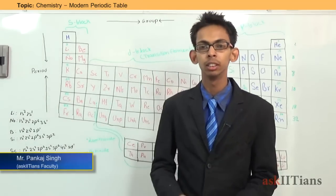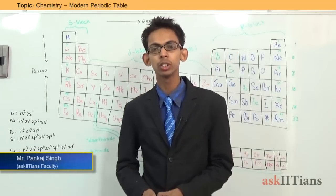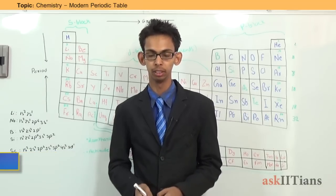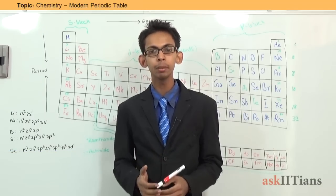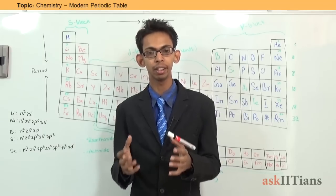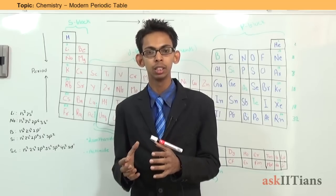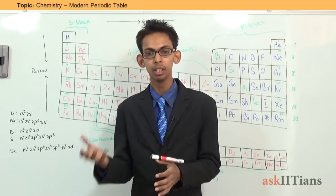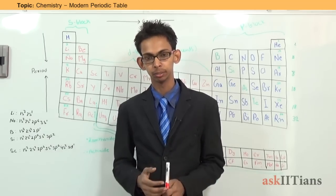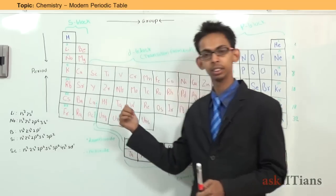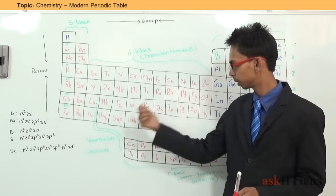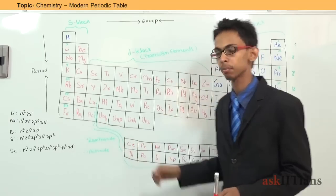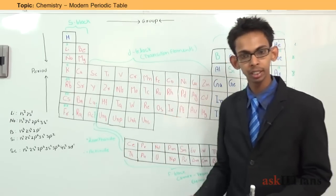Hello students, today we are going to discuss about classification of elements and modern periodic table. The periodic table is used in order to classify the elements in some groups so that we can study their properties and also compare the property of one element with another. This is the modern form of periodic table which we use today, known as the modern periodic table.